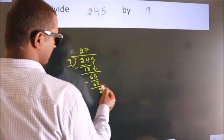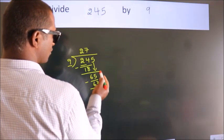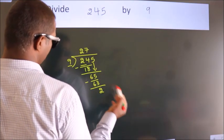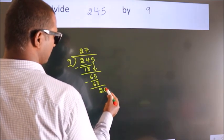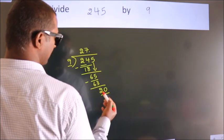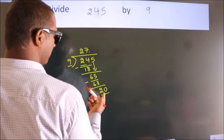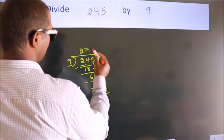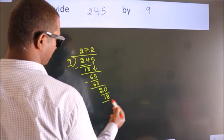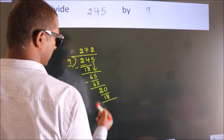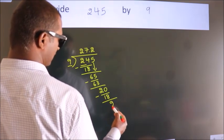After this, no more numbers to bring down. So what we do is we put dot, take 0. So 20. A number close to 20 in the 9 table is 9 times 2 is 18. Now we subtract. We get 2.